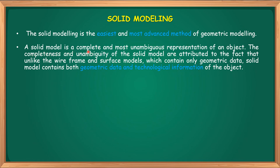Solid Modeling is the complete and most unambiguous representation of an object. The completeness and unambiguity of Solid Modeling are attributed to the fact that, unlike wireframe and surface models which contain only Geometric Data, Solid Modeling contains both Geometric Data and Technological Information of the object. This is why Solid Modeling is known as an unambiguous representation.